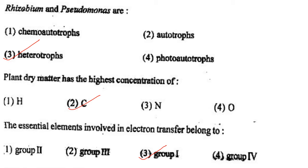Next one: Plant dry matter has the highest concentration of option 1, hydrogen; option 2, carbon; option 3, nitrogen; option 4, oxygen. Answer is option 2: carbon.